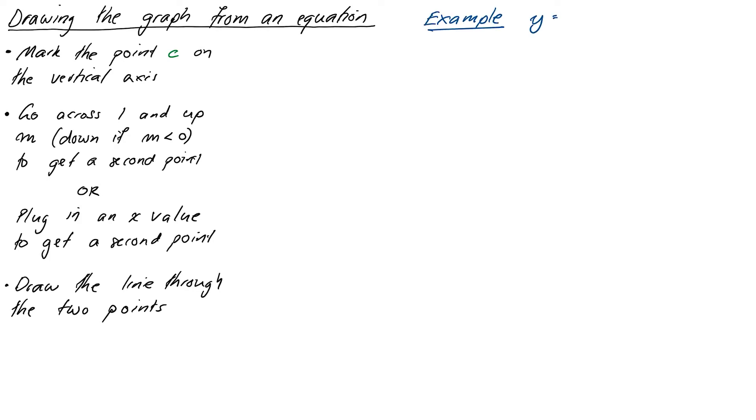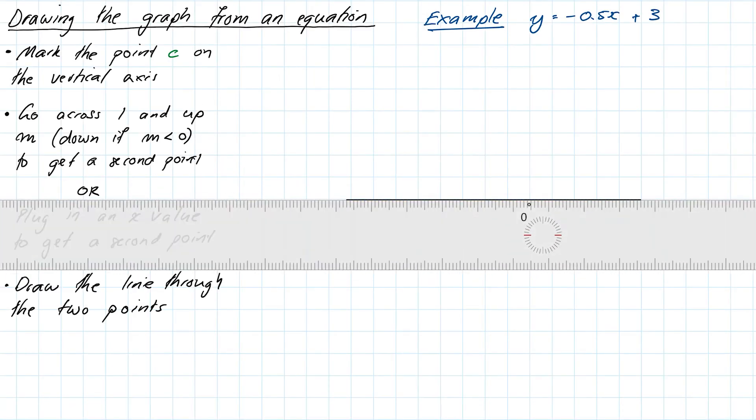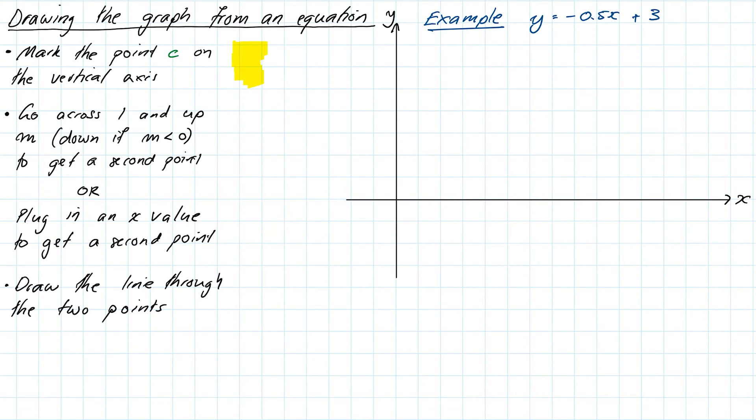Let's practice by drawing the line y equals negative 0.5x plus 3. So I can start by indicating my y-intercept, which is going to be 3. So I'll draw that on my graph as a little point. And then I can go across 1 and down 0.5. It's down because it's negative, because the slope is negative 0.5. And that will give me my second point.